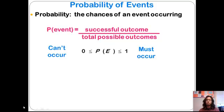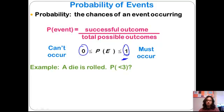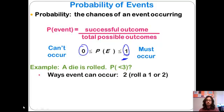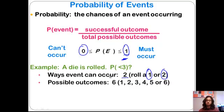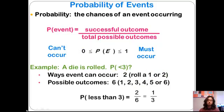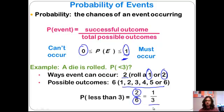What can't occur would be a 0% chance, and the maximum probability you could get would be 1 — that's why probability is always going to be out of 1. An example: if we have a die that is rolled and we want the probability that it will roll something less than 3, there are two ways that can happen — we could roll a 1 or a 2. So there are two possible outcomes out of six total, giving a probability of 2 out of 6, or 1 third.